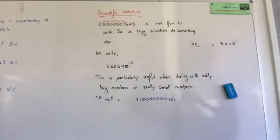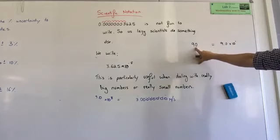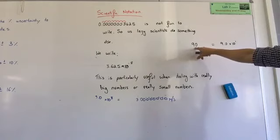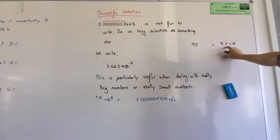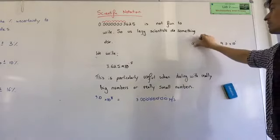And then someone reading that would know what? 90. There is two significant figures. Because 90, is that 0 significant? No. That 0 is not significant, is it? No. Whereas this 0, is that significant? Yes. So using scientific notation, we can show our significant figures. Clear?